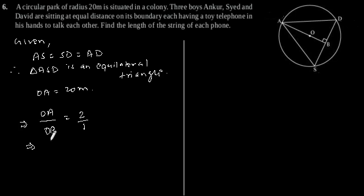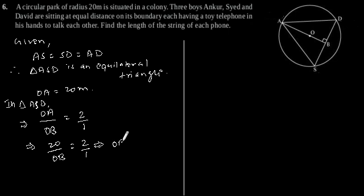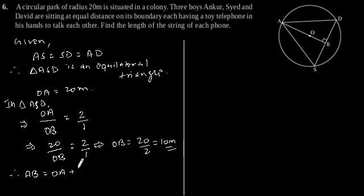We can write OA divided by OB equals 2 by 1. This gives 20 divided by OB equals 2 by 1, which implies OB equals 10 meters. Therefore, AB equals OA plus OB equals 20 plus 10, which is equal to 30 meters.